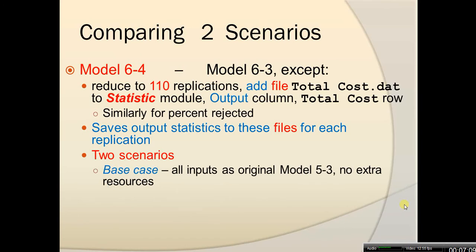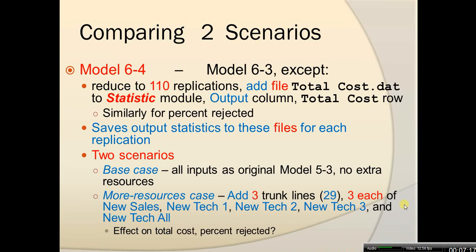We'll look at two scenarios. The base case uses all inputs just as in the original model 5.3 without any extra resources. The more resources case adds three trunk lines to increase the total to 29, and adds three resources each for new sales, new tech 1, new tech 2, new tech 3, and new tech all. We just need to go in and change the default value for the variables representing these new resources. It will be interesting to learn whether these changes affect total cost and percent rejected.